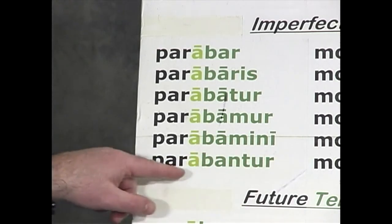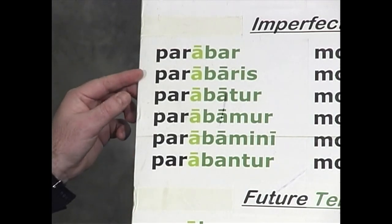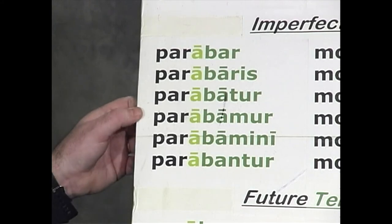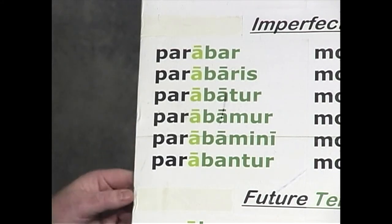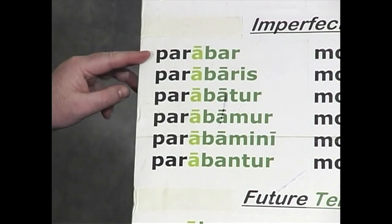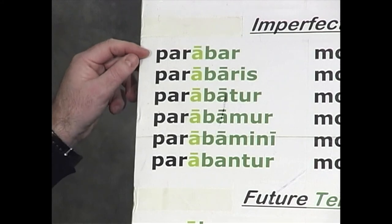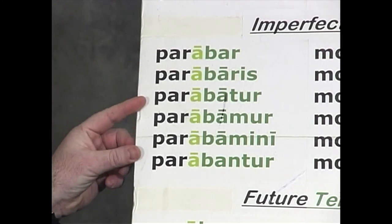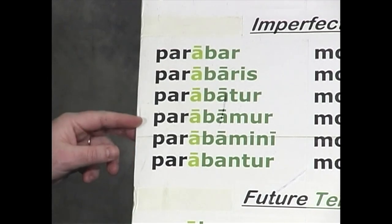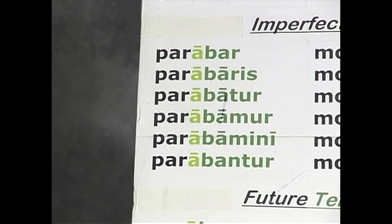You add that whole thing to the stem of the verb. The translation: I was being prepared, you were being prepared, he was being prepared, we, you plural, they were being prepared. The subject is being acted upon.